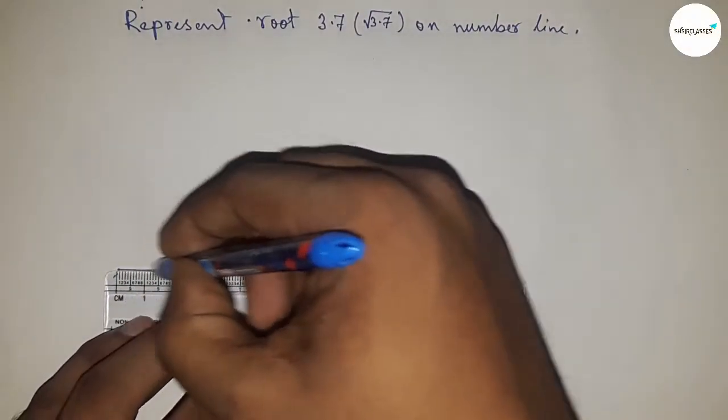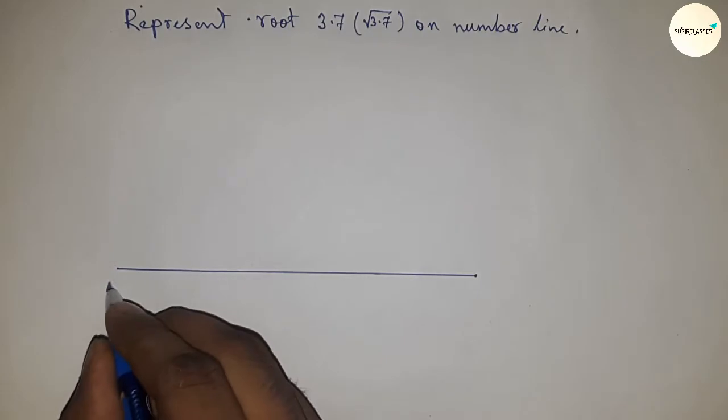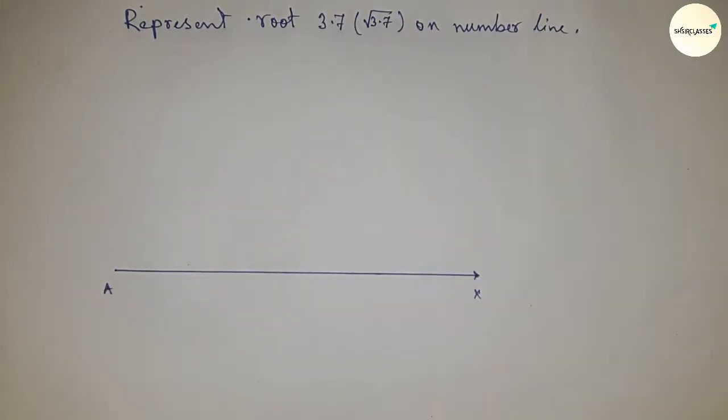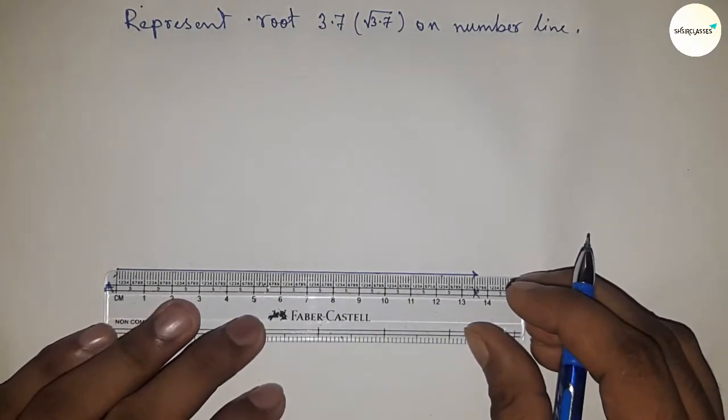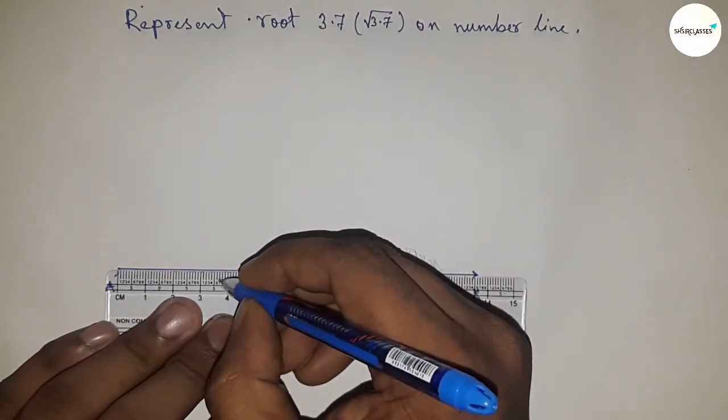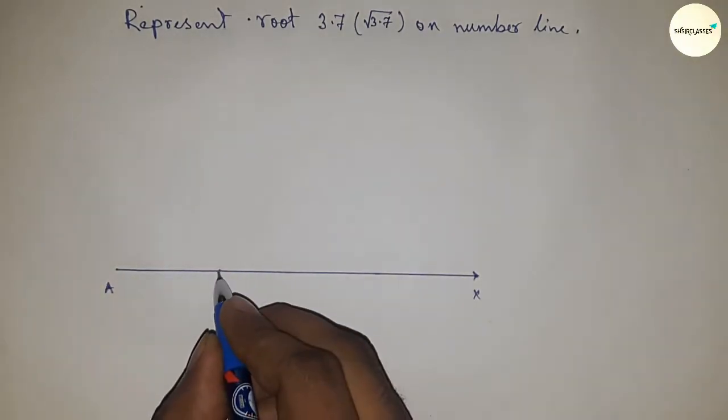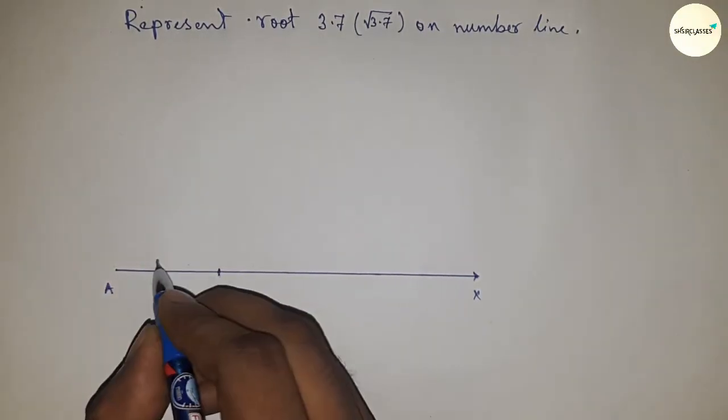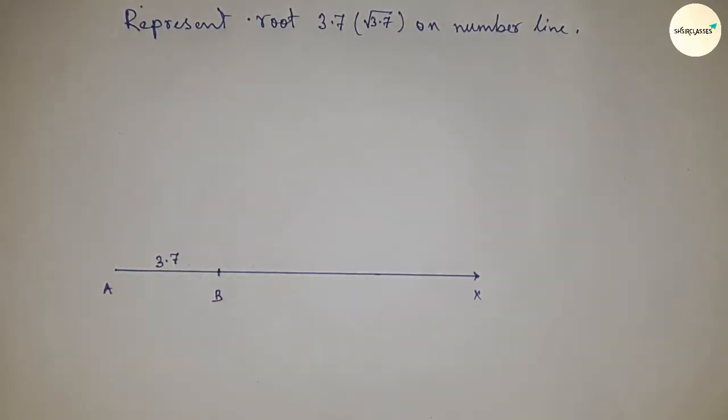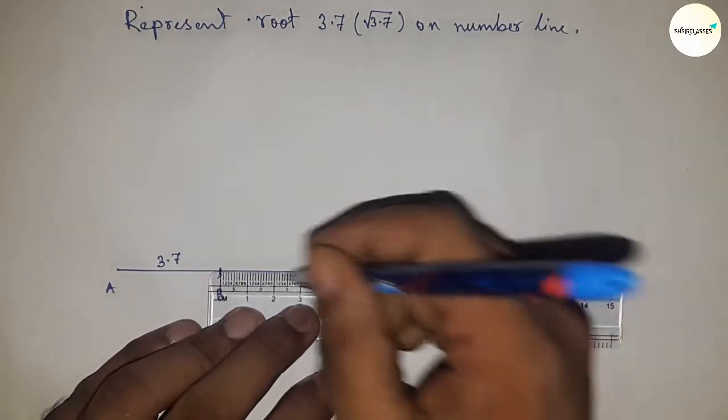First of all, drawing a line of any length here, and this is AX line. Next, taking a distance 3.7, so this is 3.7 centimeters. This is B. AB is 3.7 centimeters.